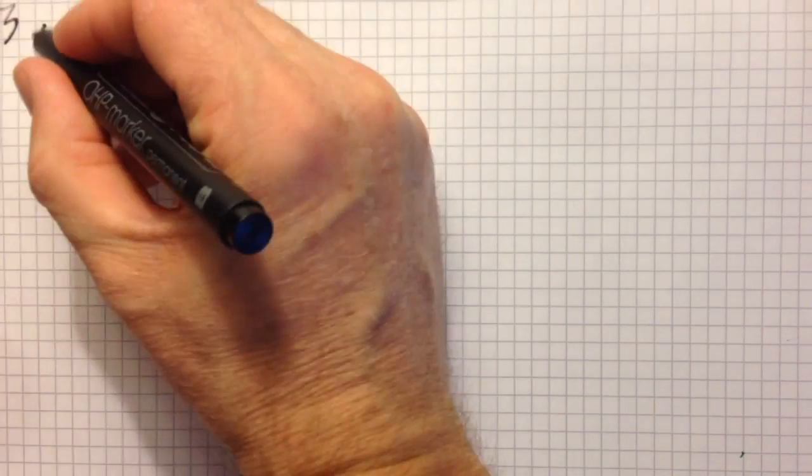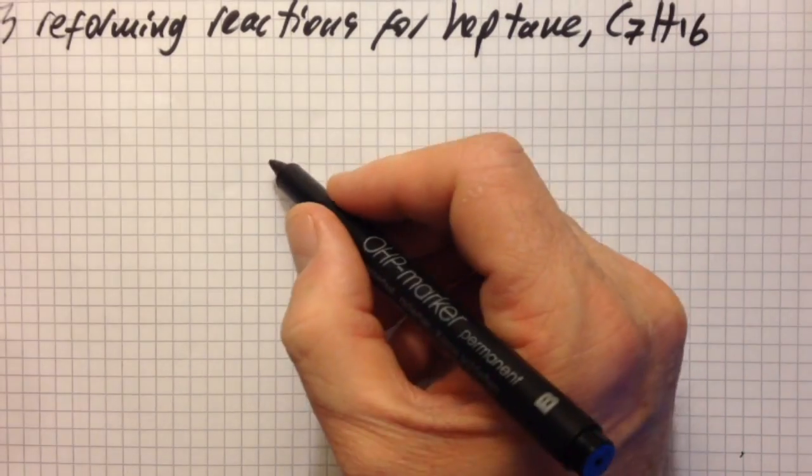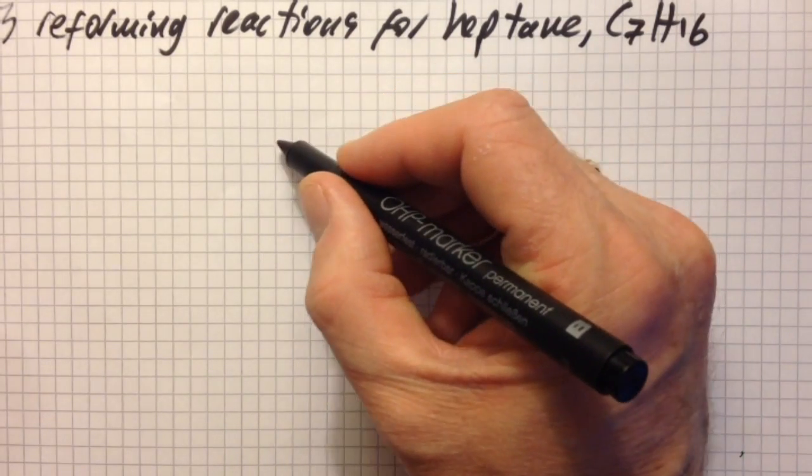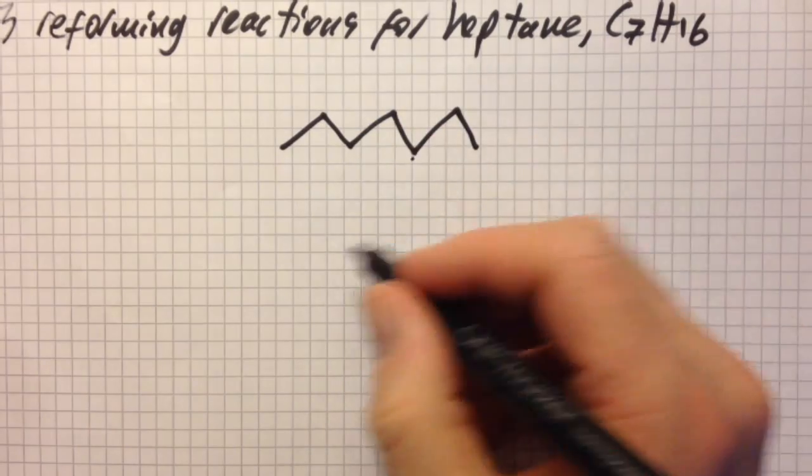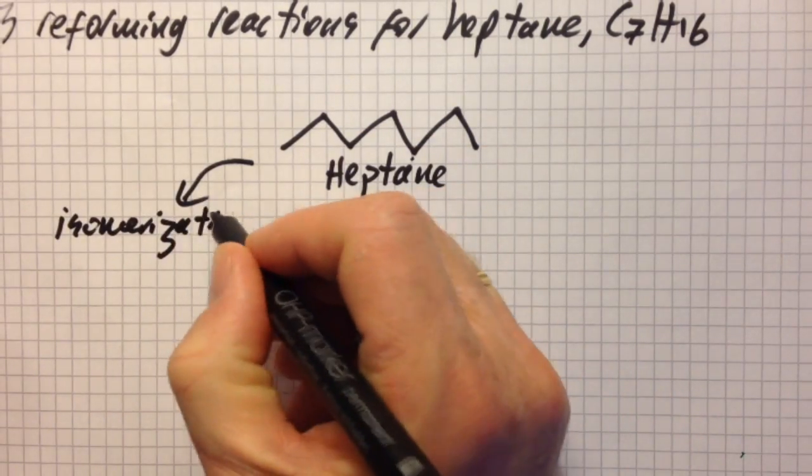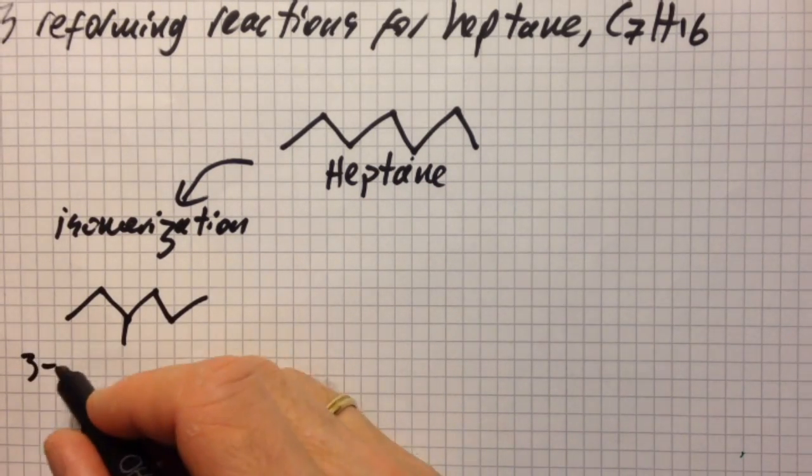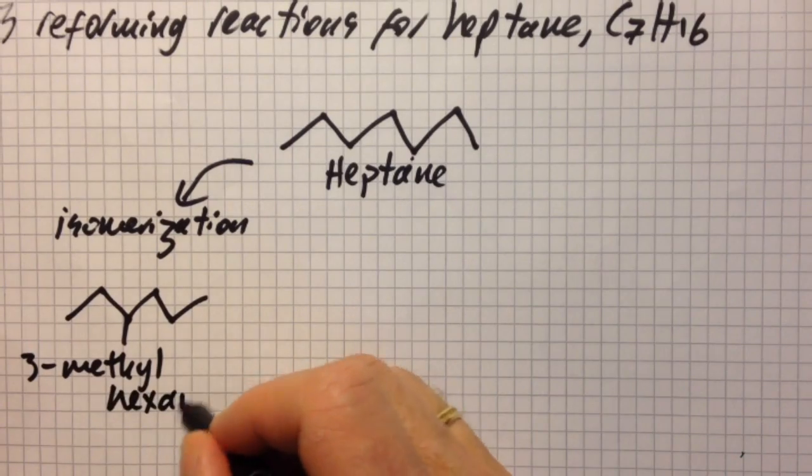Finally, let's look at another reforming reaction, not of hexane but let's say heptane. That's got seven carbons. I'm going to use the skeletal structures. First of all, isomerisation. So I've got to make a branch. Doesn't matter where the branch is, as long as it's not at the end of course. That isn't a branch.